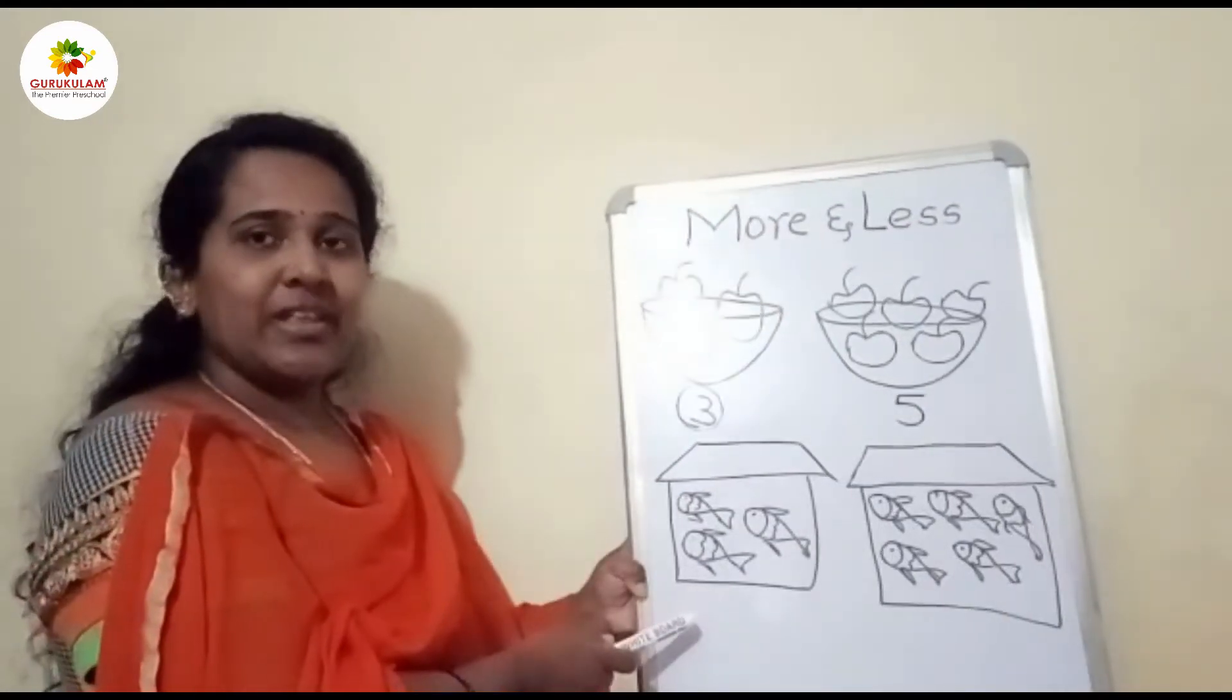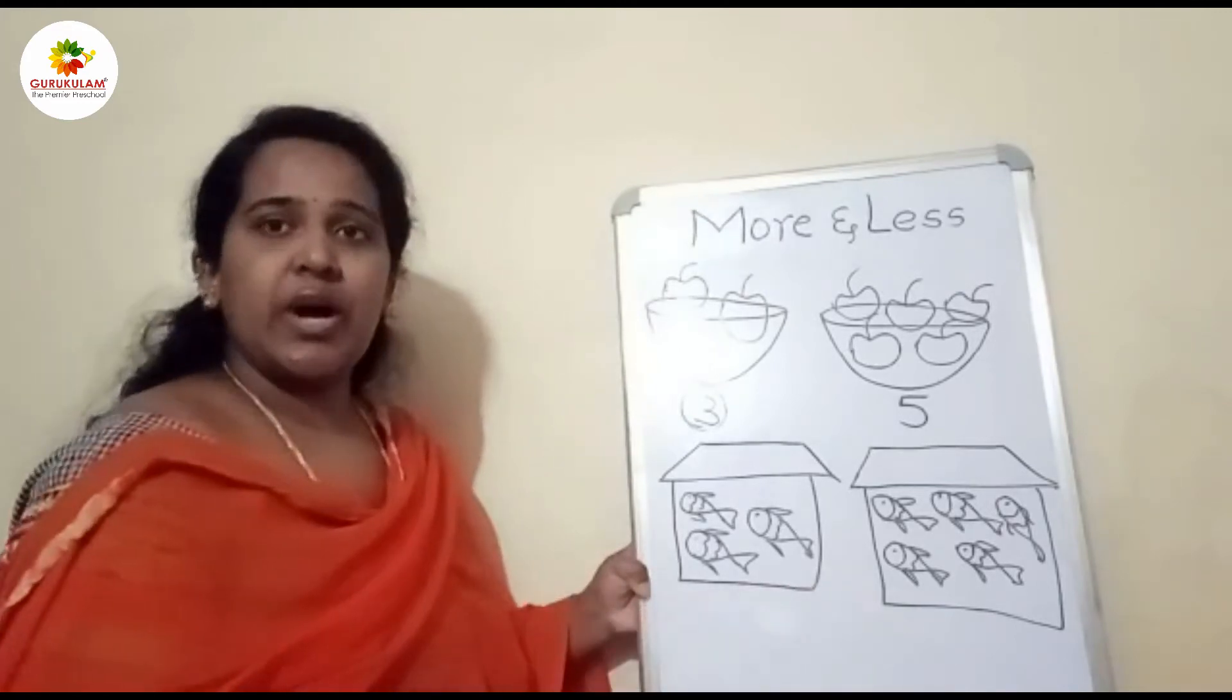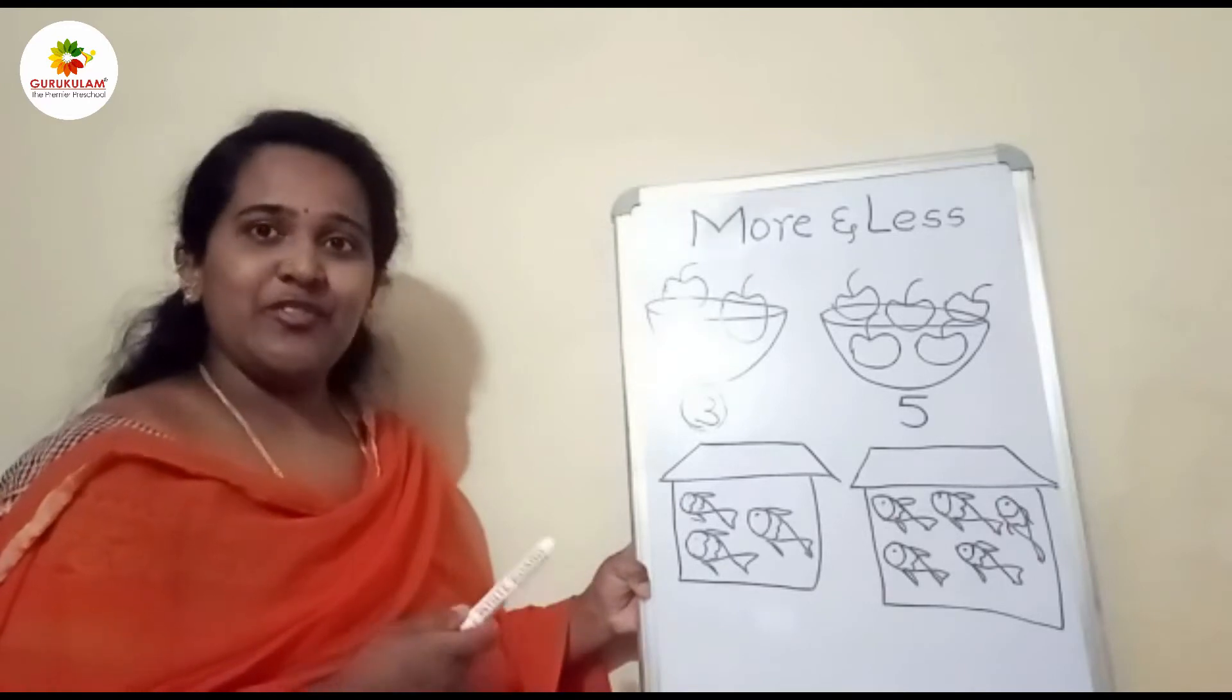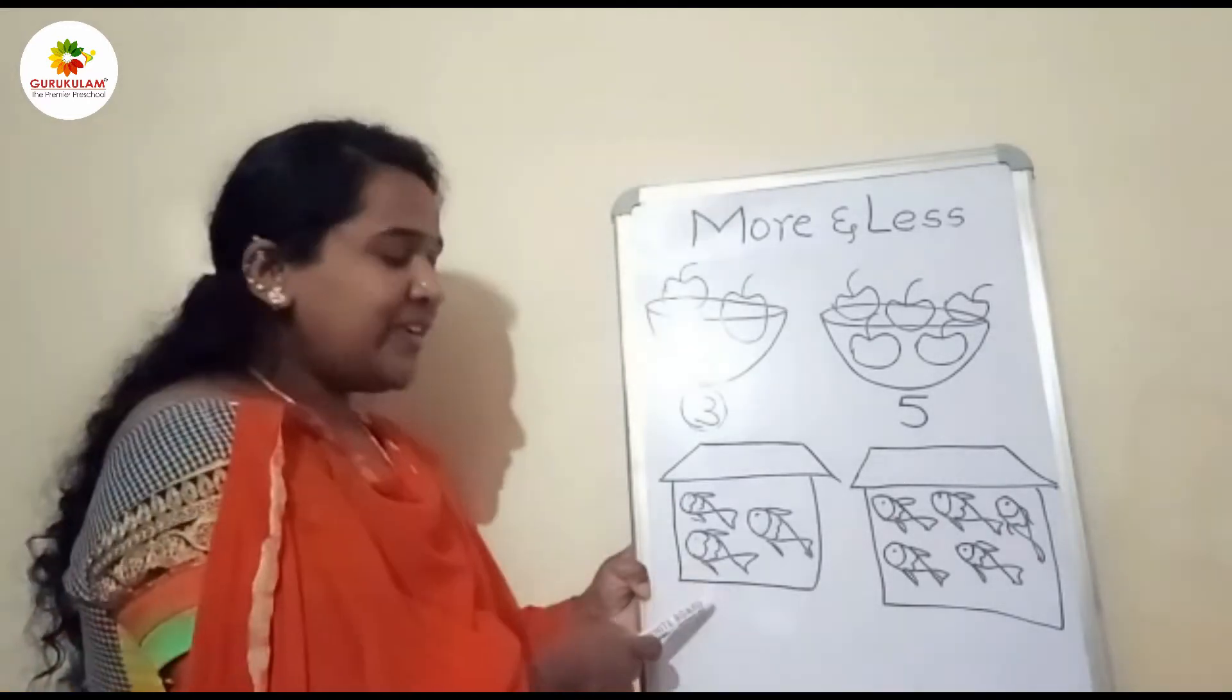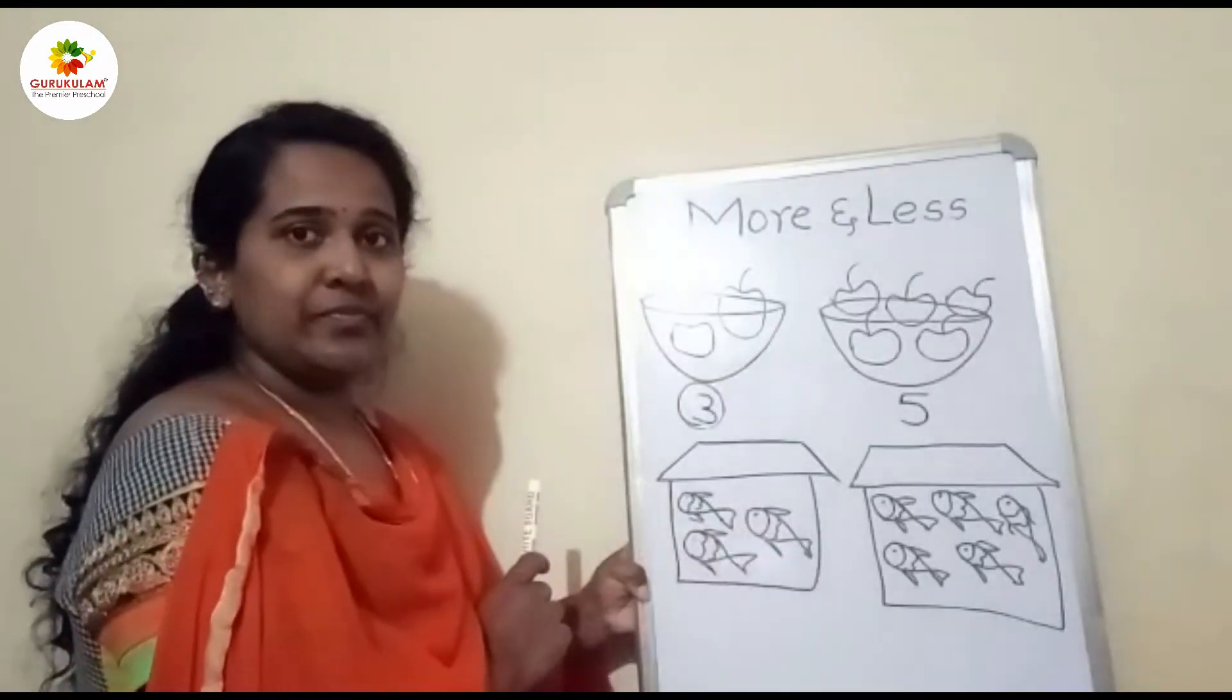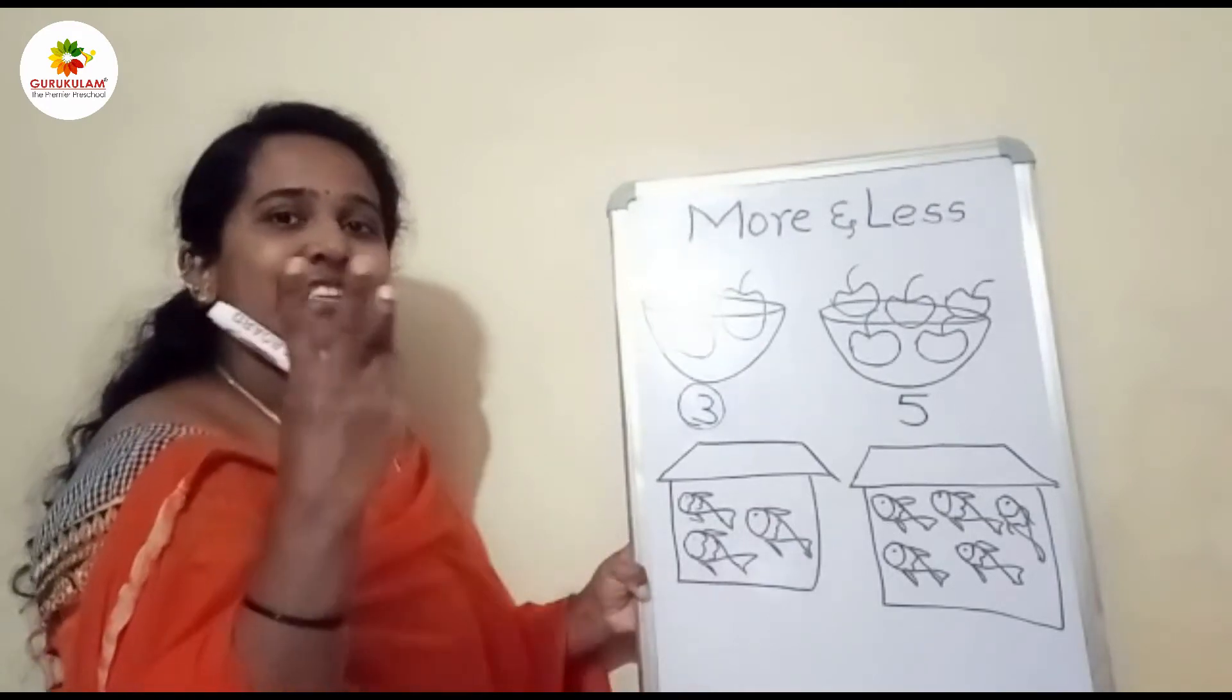Can you see we have one more object on the board? We have here two aquariums. In two aquariums we have fishes. Children, let's count the first aquarium: one, two, three. So in the first aquarium, how many fishes are there? Three. Yes, three fish.